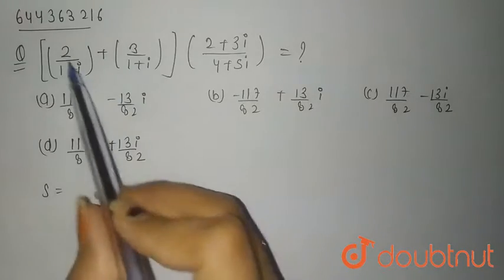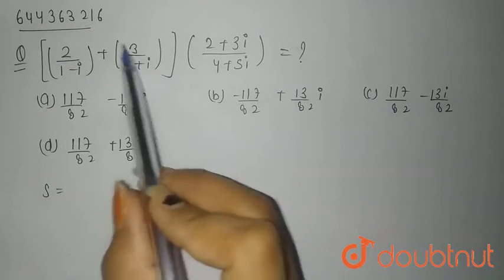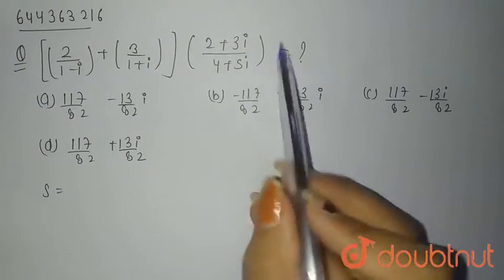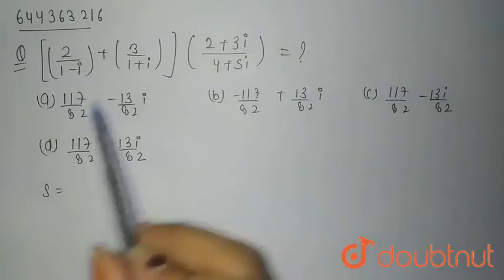Hello everyone, so the question is 2 upon 1 minus iota plus 3 upon 1 plus iota into 2 plus 3 iota divided by 4 plus 5 iota. So we need to solve this and find the value.